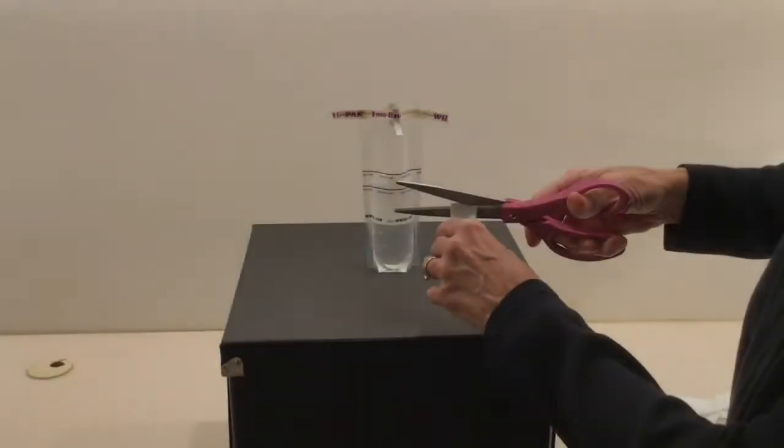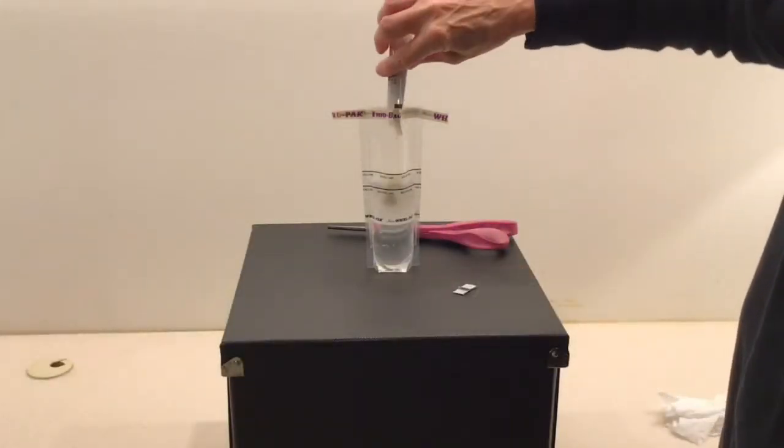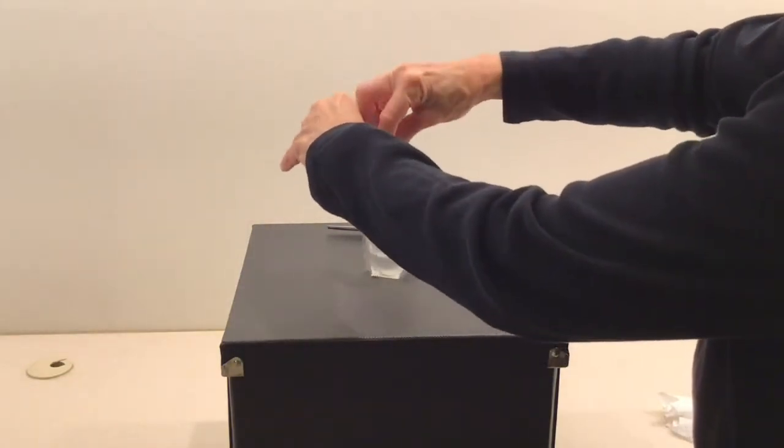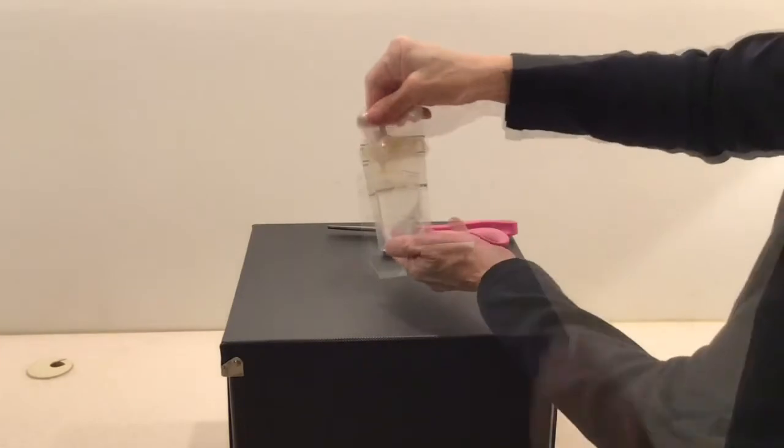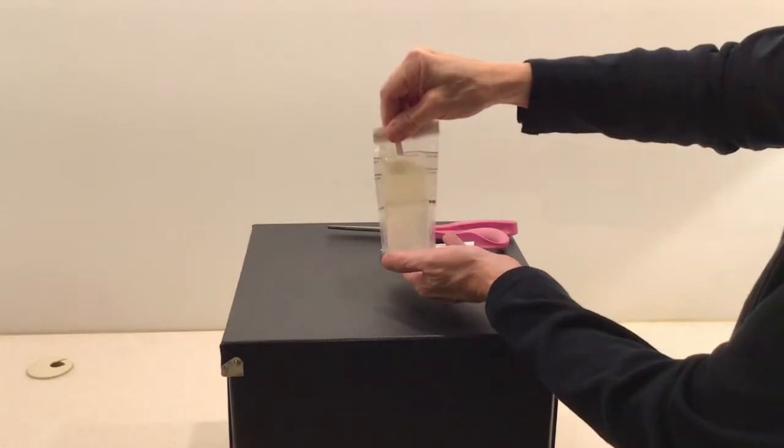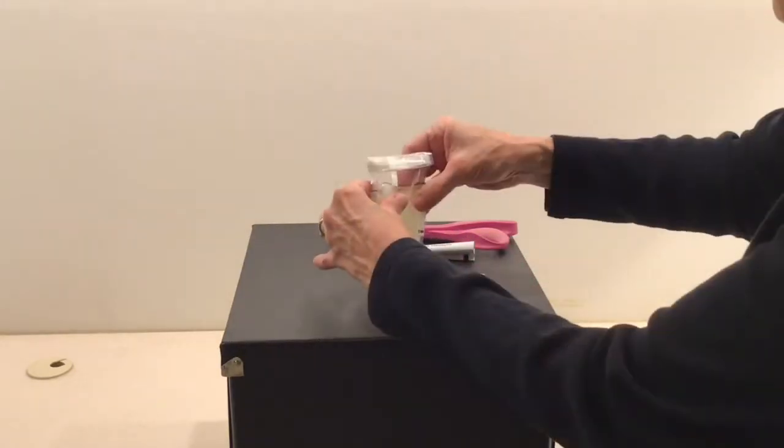Open the Aquagenx growth medium packet and pour the powder medium into the thiobag. Close the bag shut with the Whirlpac seal. Dissolve the growth medium in the sample by gently swirling the bag and squeezing clumps of powder until the medium is dissolved.